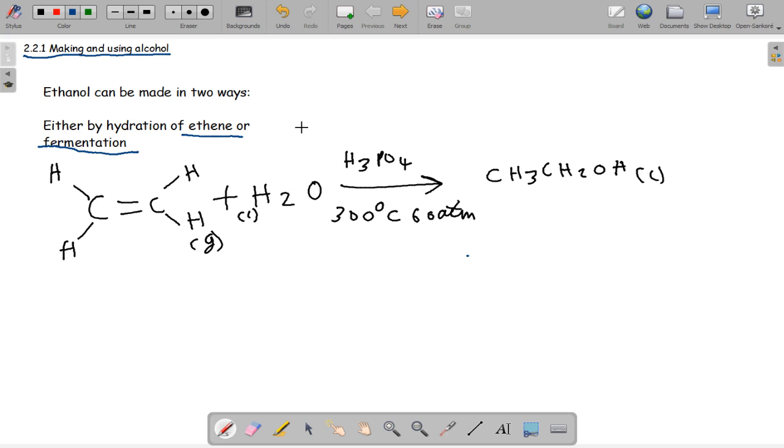We are going to hydrate ethene or by fermentation. This is the hydration of ethene. We just get ethene with a bit of water and lots of phosphoric acid at high temperature and pressures. You don't need to remember those reaction conditions, and we make CH3CH2OH liquid.